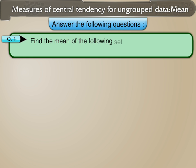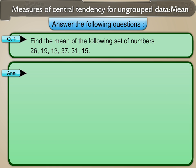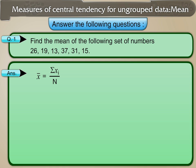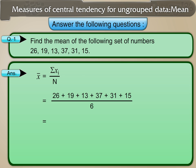Find the mean of the following set of numbers: 26, 19, 13, 37, 31, and 15. The mean equals sigma xi divided by n, where sigma xi is the sum of the observations and n is the number of observations. Therefore, mean equals 26 plus 19 plus 13 plus 37 plus 31 plus 15, divided by 6, which equals 141 upon 6, equal to 23.5. The mean of the given numbers is 23.5.